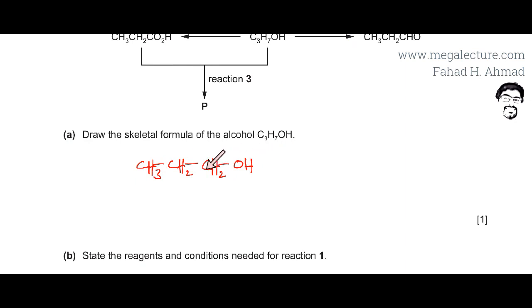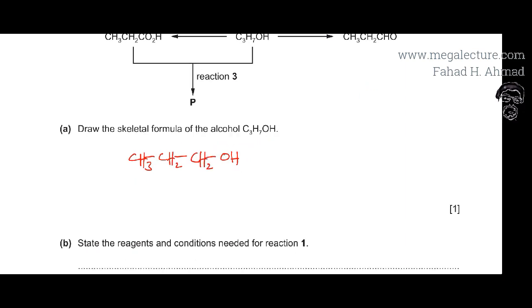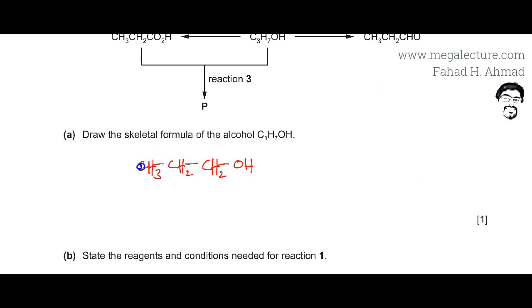The way you draw the skeletal formula is that the carbon atoms are nodes on the skeletal formula. So that's 1, 2, and 3, and there's going to be an OH attached to the third carbon atom. So these are the nodes - 1, 2, and 3 carbon atoms - and this is going to be the skeletal formula for the molecule.